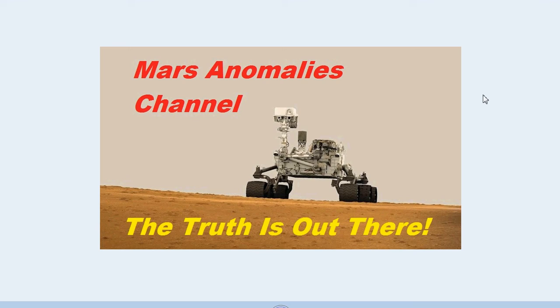As anybody knows, the Curiosity rover is supposed to be in Gale Crater, at the base of Mount Sharp. I call it Mount Crap, because it's not that the mountain may not be there — it's just that they've done so much manipulation, you can't tell.